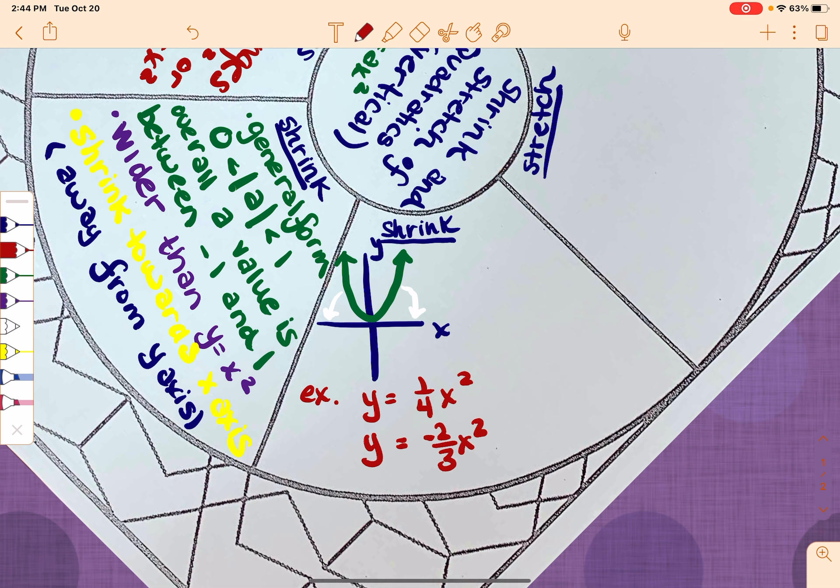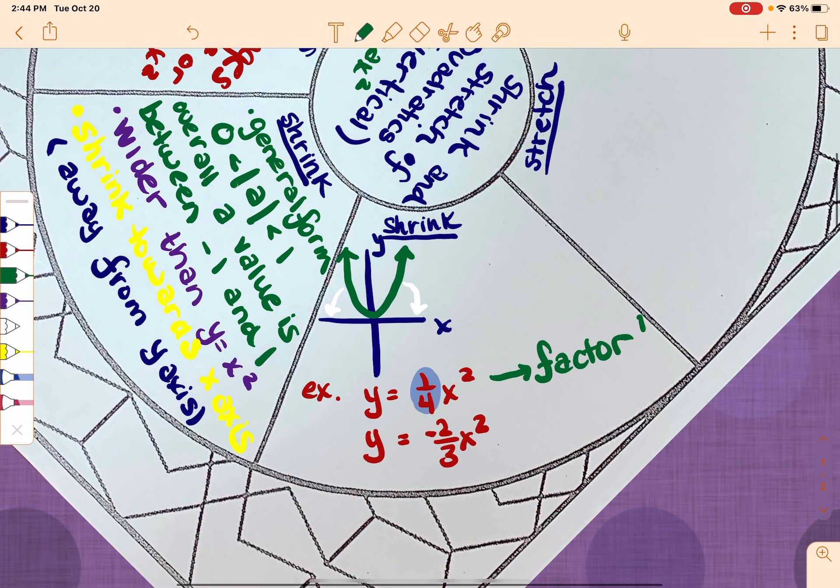Now, the one part we haven't talked about is the factor, so I want to show you how this works. If I have a factor, if my equation was y equals 1 fourth x squared, this is going to be my factor. So my factor would be 1 fourth.